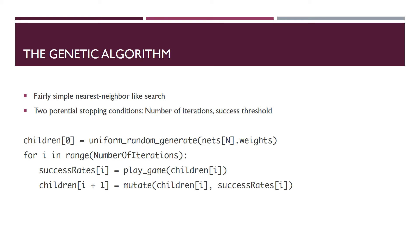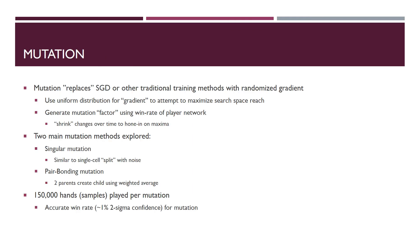Generally the algorithm initializes the weights and biases of the neural networks to a set of uniform random variables. Then for each iteration, it calculates the win rate or return rate of each child and mutates the children using a mutation routine — this is the heart of the genetic algorithm. The mutation function replaces standard gradient descent with a randomized gradient: instead of taking the theoretically best direction at each point, it takes a more random direction. We used a uniform distribution for the randomized vector gradient to search the space as evenly as possible and avoid local maxima. There's also a mutation factor proportional to the win rate of the network that shrinks over time as it approaches a maxima.